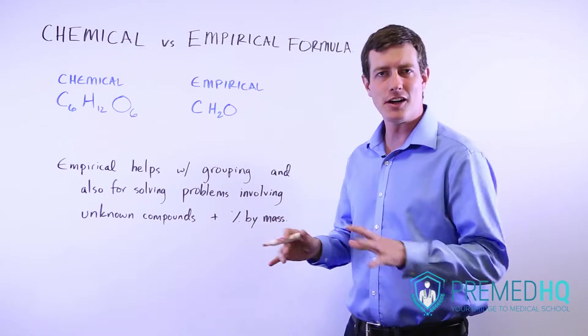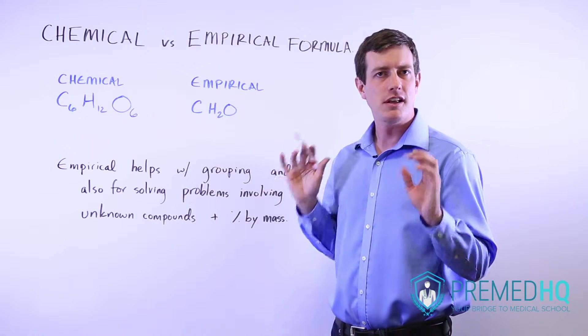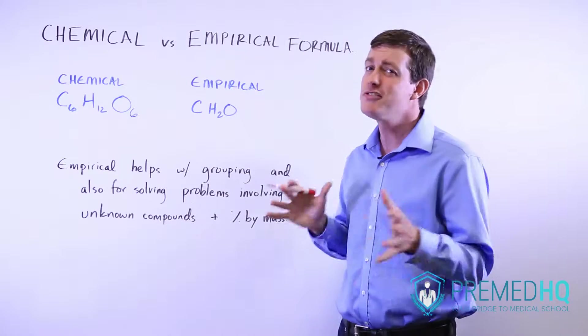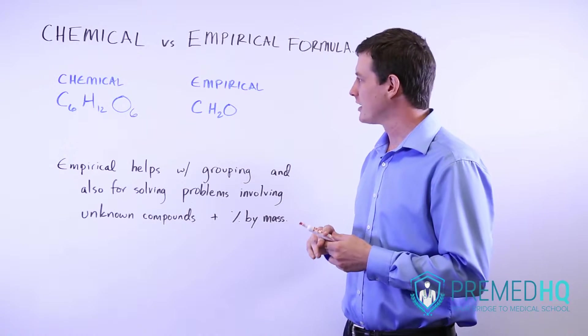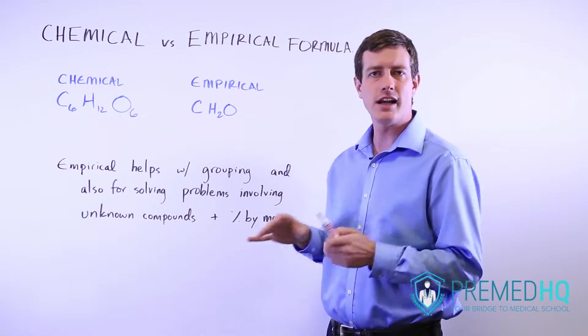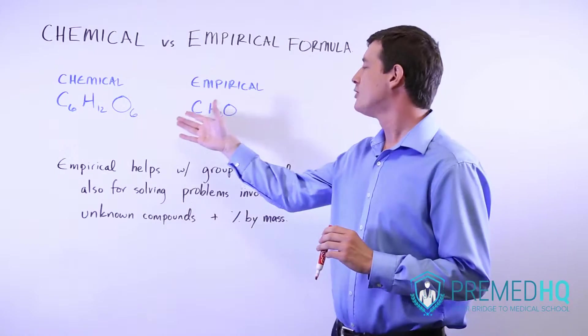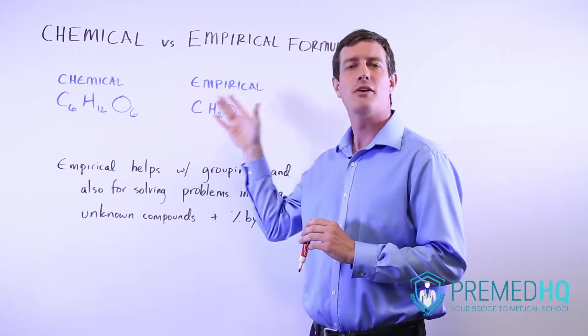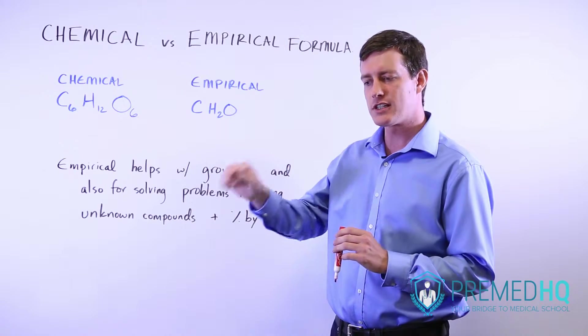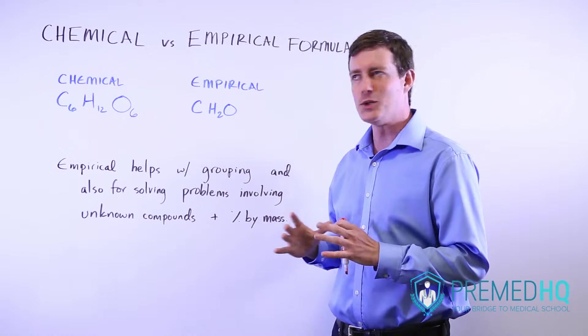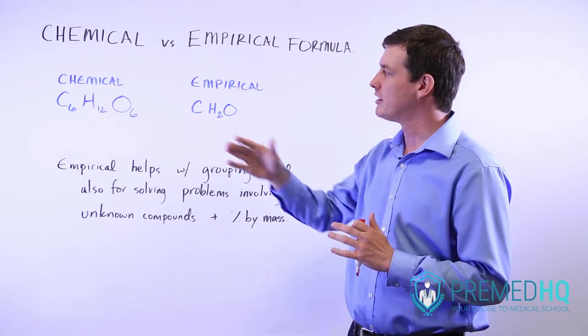Chemical and empirical formulas are two foundational concepts. They're essentially different ways of describing a compound that can both be used to answer questions related to that compound. The chemical formula is what the compound actually is.